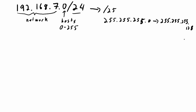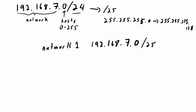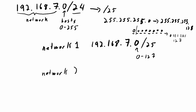That leaves the most significant bit variable for each network — in one network it can be a zero, and in the other it can be a one. For network one it will be 192.168.7.0/25, where the most significant bit is zero. The remaining bits can range up to all ones, which gives 127, so this last octet can range from zero up to 127.